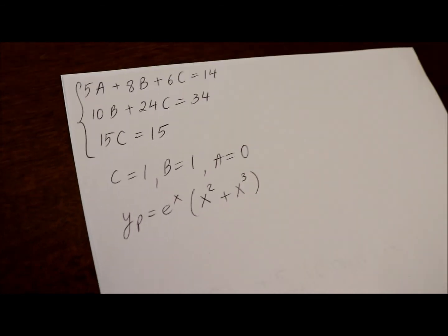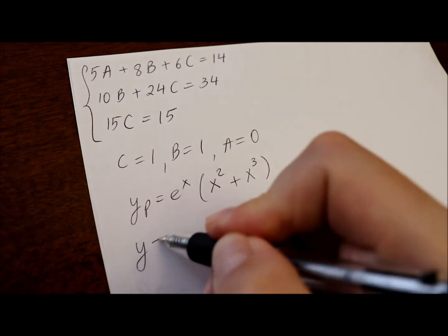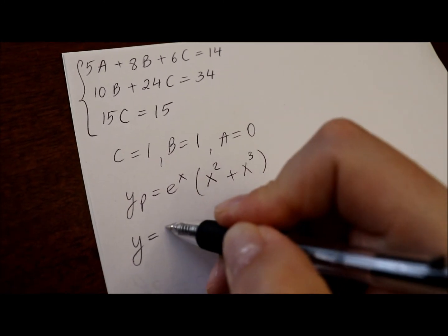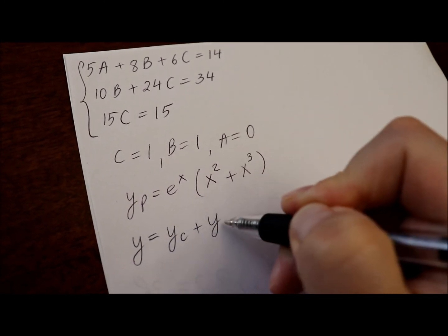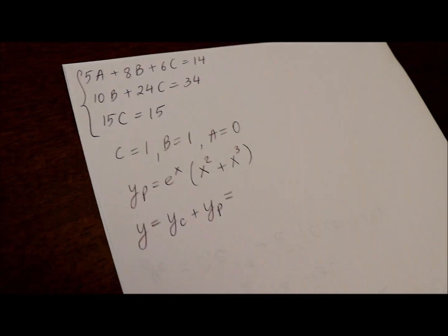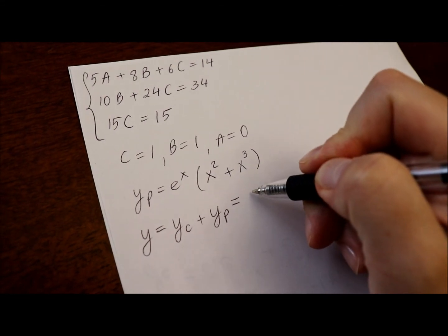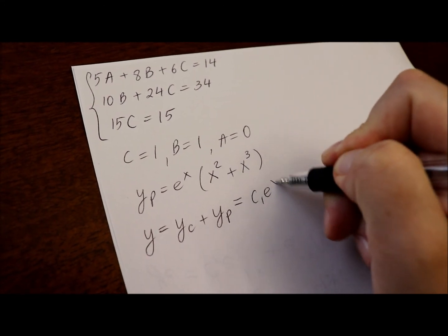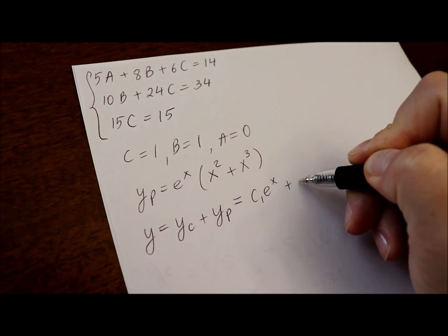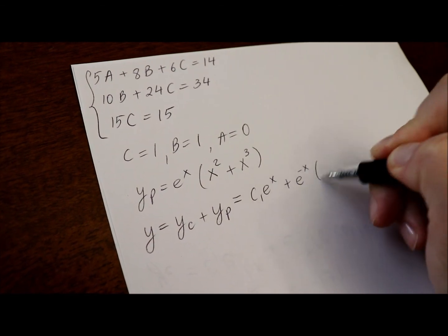And writing the general solution, we'll have to add complementary function plus the particular solution. That will be c1 e to the x plus e to the negative x,